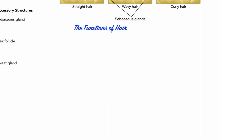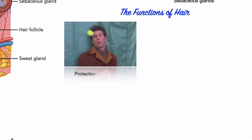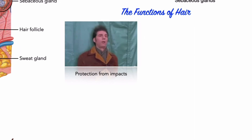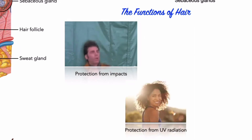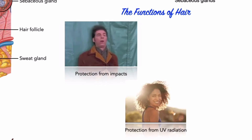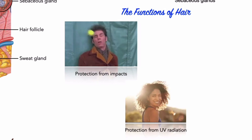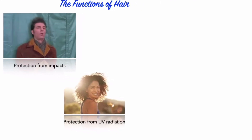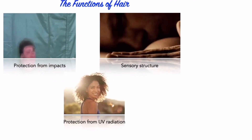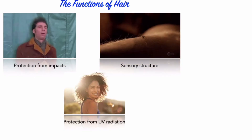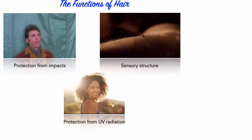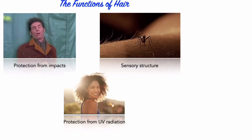The 2.5 million hairs on the human body have important functions. The roughly 500,000 hairs on the head protect the scalp from light impacts, UV light, and provide insulation for the skull. The hairs guarding the entrances to the nostrils and external ear canals help keep foreign particles out. The eyelashes perform a similar function for the surface of the eye. A sensory nerve fiber is associated with the base of each hair follicle, so you can feel the movement of a single hair shaft. This sensitivity provides an early warning system — for example, you may be able to swat a mosquito before it reaches the surface of your skin.